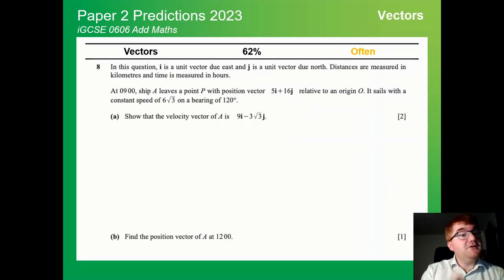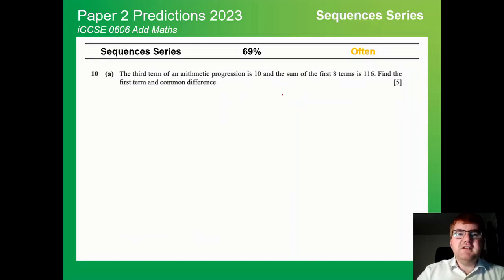Vectors is also on paper one and is also on paper two. This is an example here of where they start using i and j notation and also looking at kinematics, so looking at idea of velocity vectors and position vectors. Make sure you've understood kinematics also in a vectors context as well. Sequence and series again as appeared on paper one also appears on paper two, roughly equally. Again, really read the question carefully. Does it say the sum of terms, does it say the specific term you're looking for? Because that's going to change the formula that you use.